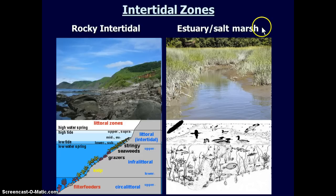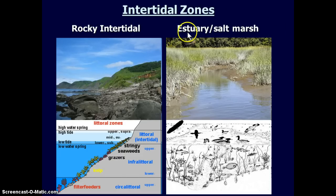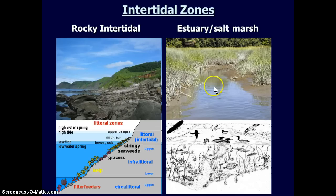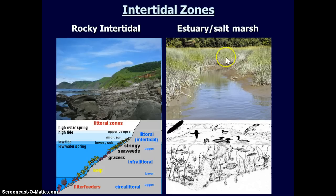The other type is an estuary or salt marsh intertidal zone. Rocky intertidal you'll see on the northern Atlantic coast, but a lot of the Pacific coast is really associated with rocky intertidal. Estuary salt marsh is what we associate with much of the eastern coast — our Atlantic seaboard. The difference is it's very shallow: less wave action, less rocky mountainous coast to erode, so it's lots of sands and silts, eroded much more shallowly. The difference between high tide and low tide is much less extreme, so it's a shallow slope, not a steep slope, with a sandy and silty substrate.